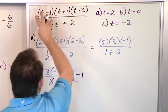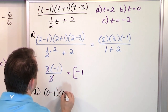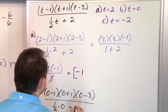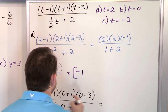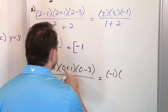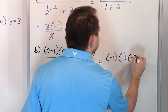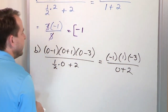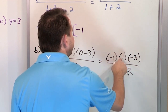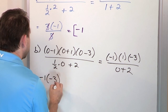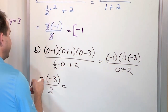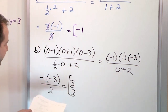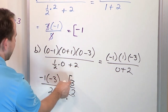Part B: t equals 0. We have (0 minus 1)(0 plus 1)(0 minus 3) on top, and ½ times 0 plus 2 on the bottom. Inside: 0 minus 1 is negative 1, 0 plus 1 is 1, 0 minus 3 is negative 3. On the bottom, 0 times anything is 0, so it's just 0 plus 2 equals 2. On top: negative 1 times 1 is negative 1, then negative 1 times negative 3 is positive 3. Result: 3 over 2, or 3 halves.